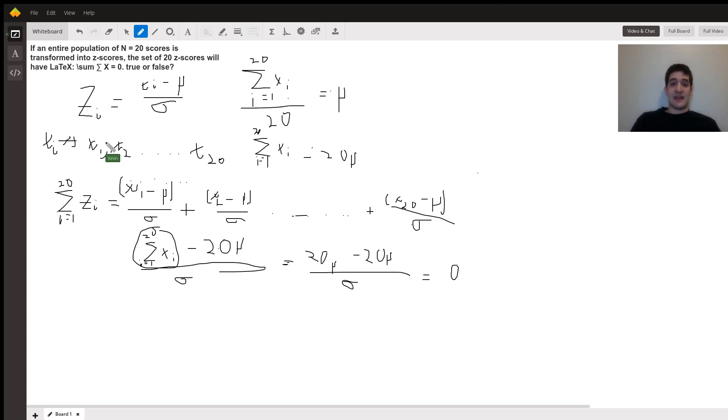Thus, we can say, yes, it is true. The sum of those z-scores will equal 0. So that's the key thing. Yes, absolutely, the sum of the z-scores equals 0. And here's why: we just need to rearrange the xi's and the mu's using the standard definition of the z-score. And we can see this. Have a good one.